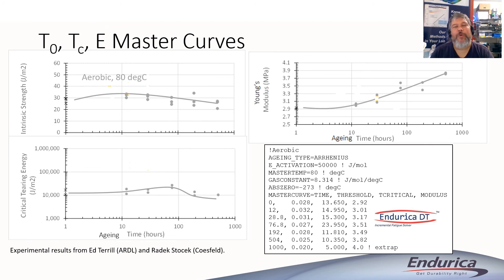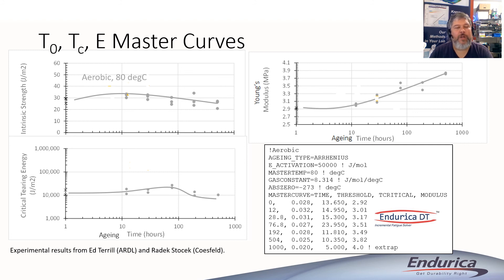Let's unpack the new aging feature. What you're looking at on this slide are experimental results — aging experiments for a model tire belt coat rubber — and these plots show how the mechanical properties of the rubber evolve. In the top left, we've got the fatigue threshold evolution with time. In the bottom left, we have the critical tearing energy, the strength of the rubber, and how that evolves with time at the reference temperature, in this case 80 degrees Celsius. And then finally, on the upper right of the slide, we have a plot of Young's modulus as a function of time. All of these parameters can evolve with time, and so we need to be able to represent that in the code.